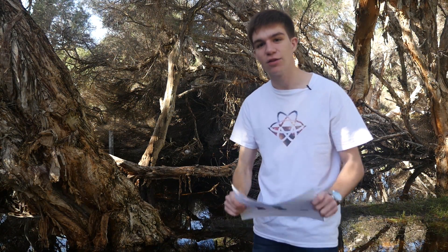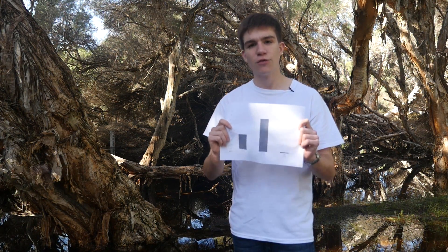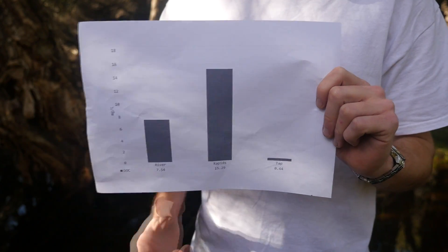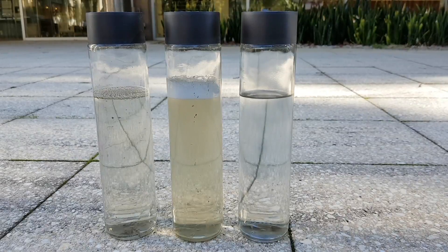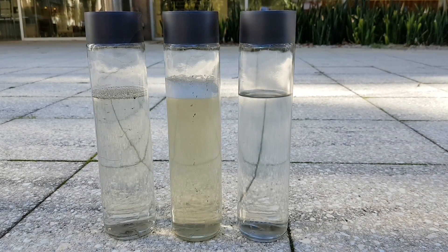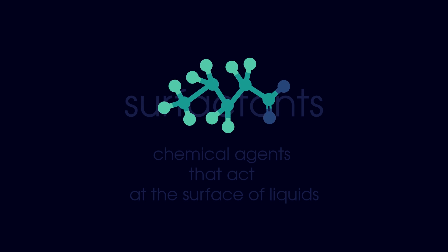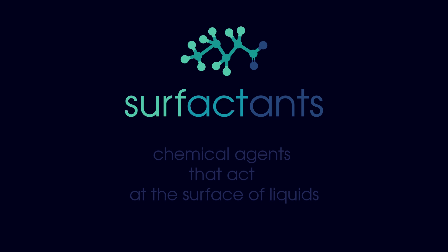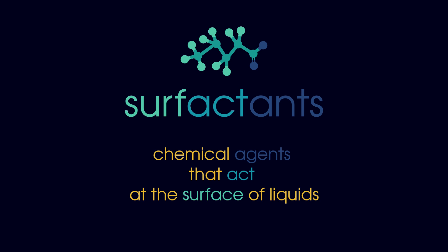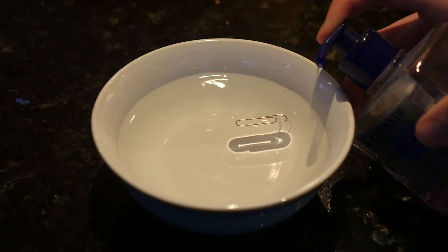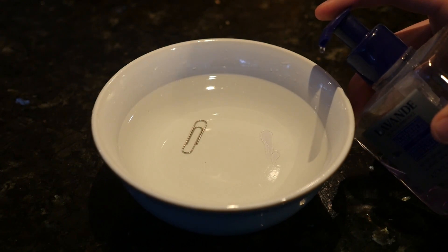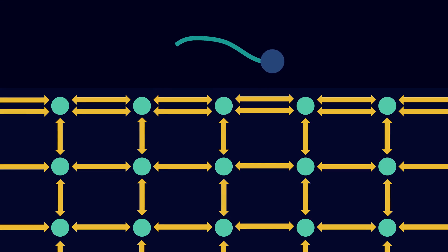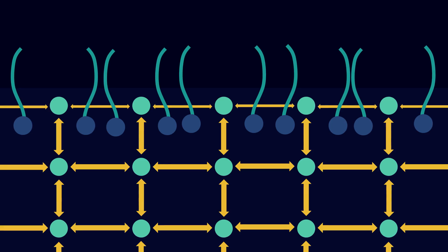As you can see, surface tension is strong enough to support a paper clip. In order to create our foam, we need to reduce the surface tension of the water. It's now been three weeks and the results are out. As we can clearly see, there is much more dissolved organic carbon in the rapids water than either the river or in the tap. We can even see some of this in the form of the brown colouration of our sample. Much of our dissolved carbon is part of a group of molecules called surfactants — chemical agents that act at the surface of liquids. Soap is part of this group. By adding in just a little bit of soap, the surface tension becomes too weak for the paper clip and it sinks to the bottom. This means the dissolved carbon in our rapids water reduces surface tension, allowing bubbles to be formed.